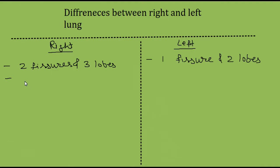On the right side, the anterior border of the right lung is almost straight, but on the left side the anterior border is notched.